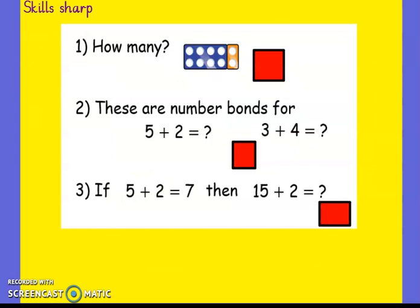Okay, so another little bit of skills sharp. So how many here? Really quickly, we've got a ten and two. Ten and two is twelve. Okay, what are these number bonds for? Five add two, three add four. What do they both equal? Seven. Okay, so if five add two equals seven, then fifteen add two is going to be? We've got a ten, we've got a seven, the ten and seven together is seventeen.